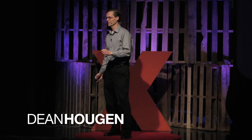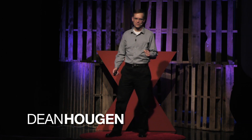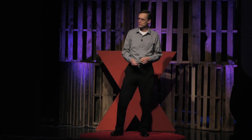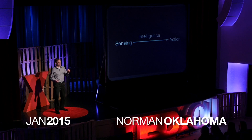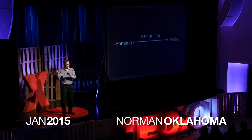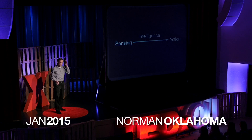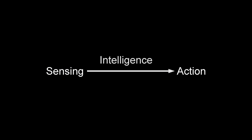Imagine that you're a roboticist — that is to say, imagine you're engaged in one of the most audacious, even preposterous research endeavors ever engaged in. Your job is to design machines that connect sensing of the world with action in the world, and between the two, you want to put intelligence. Of course, sensing and acting are both hard, but what's really hard here is intelligence. We don't know what intelligence is. We don't have a good definition for it. We can't agree on how many different kinds there are, and yet we're going to try to put it into a machine.